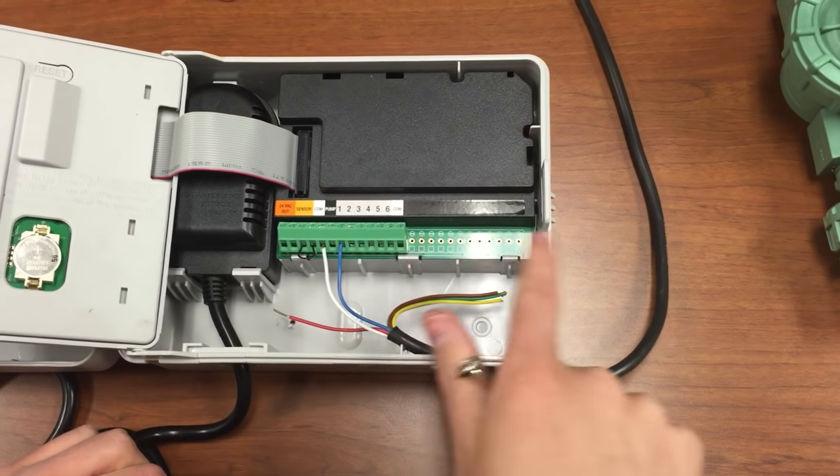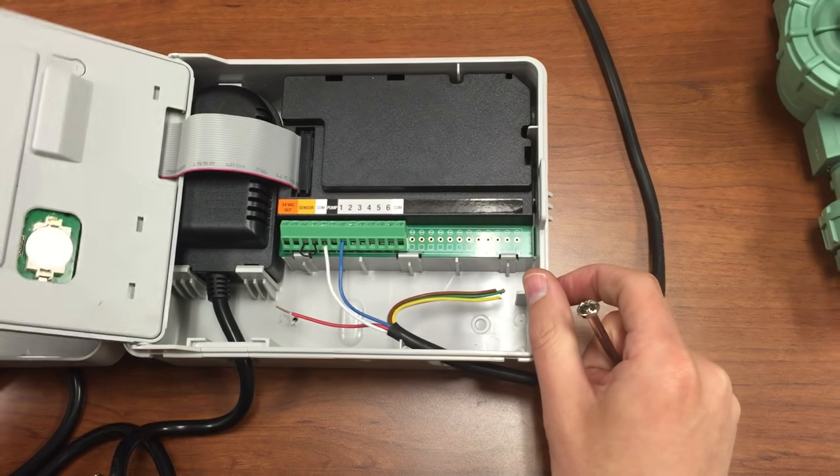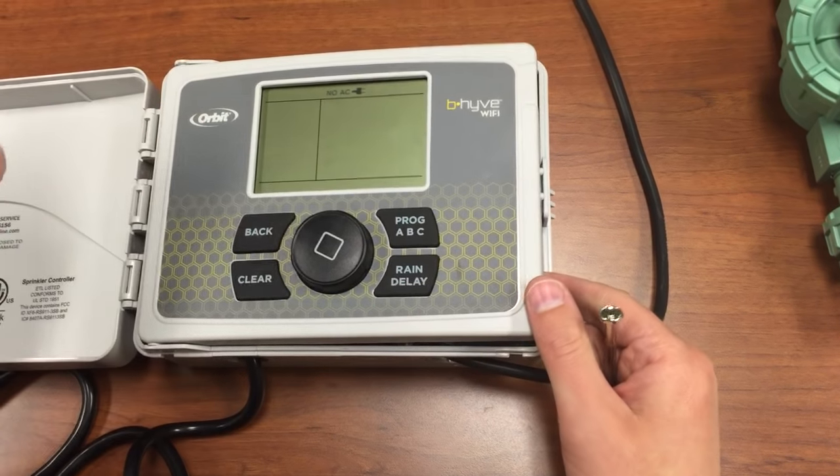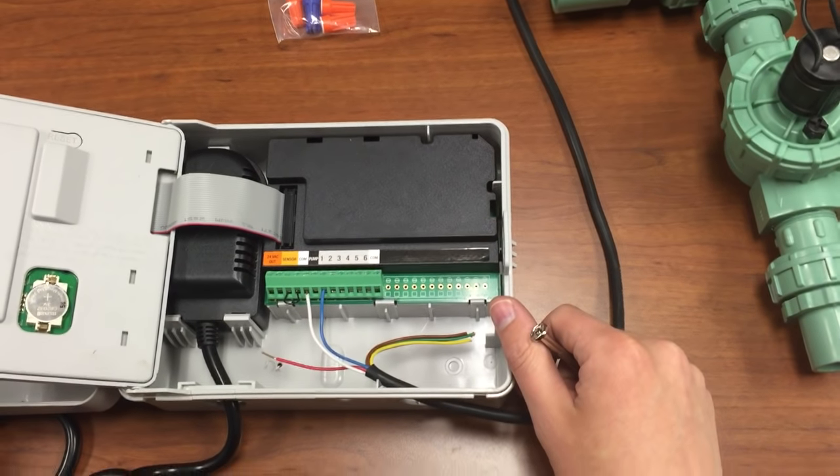You would do this with all of the colored wires along the spectrum, however many solenoids you had hooked up. And then you could go ahead and plug it in, run a test, and each valve should open as you've dictated. And then you can go ahead and program it.